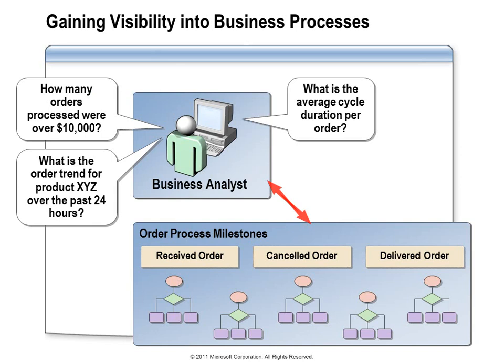We know that BAM can collect data from an instance of a business process while it is executing, and that data could come from BizTalk applications as well as applications outside of BizTalk. But the question remains — what can we actually do with that data, or what kind of questions can we answer with it? For example, if we had one of the components in our process report the amount of an order that it was handling, then we could query BAM to find out how many orders have been processed that are over $10,000.